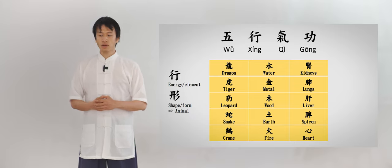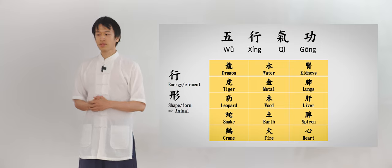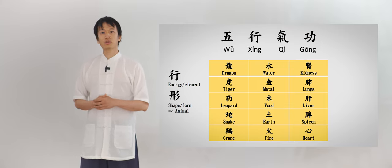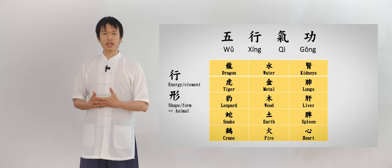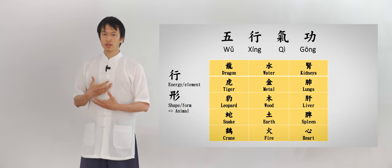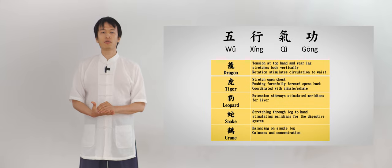So written in the order of the actual form we do, it is long, hu, bao, she, he. The dragon, the tiger, the leopard, the snake, and finally the crane. As we know, the dragon corresponds to water, and this is the kidney. Tiger, to metal, and to lungs. The leopard, to the liver, to wood. And the snake, to earth, and to the spleen. The crane, to fire, and the heart.